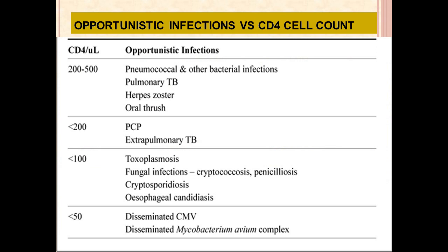Opportunistic infections are infections acquired only in individuals whose immunity is lower. When the CD4 cell count is between 200 and 500, the infected individual is at risk of acquiring pneumococcal and other bacterial infections, pulmonary tuberculosis, herpes zoster, and oral thrush.